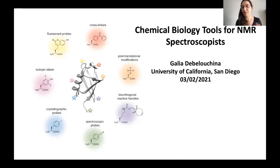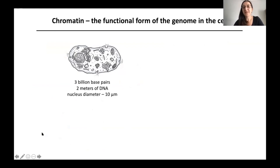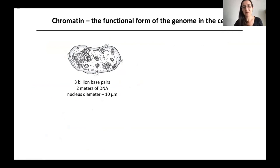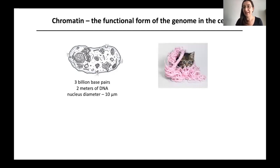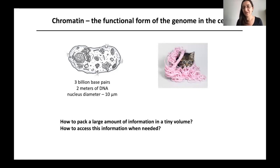My group studies chromatin, which is really the functional form of the genome in the cell. Chromatin helps the cell with two things: the DNA the cell has is actually very long — about three billion base pairs, about two meters — and all of that has to fit into a tiny nucleus which is only 10 micrometers in diameter. The second problem is how to do that in a way that makes sense, so it can turn genes on or off.